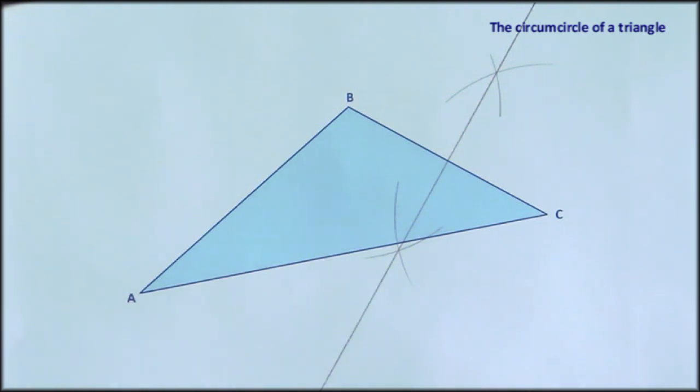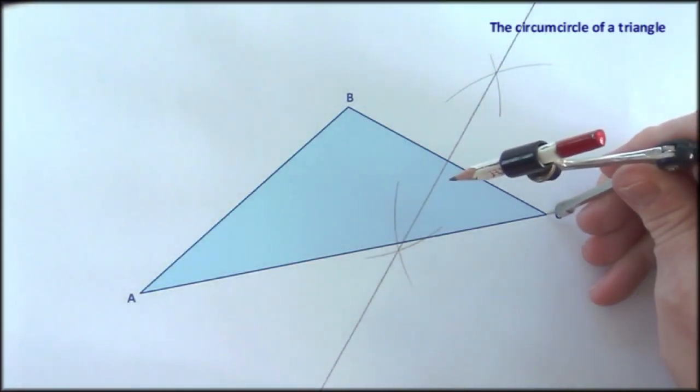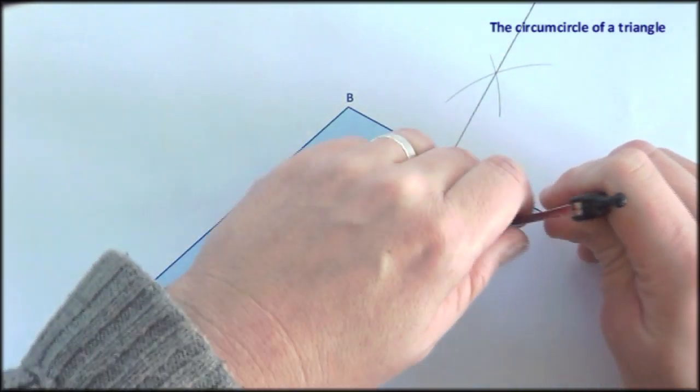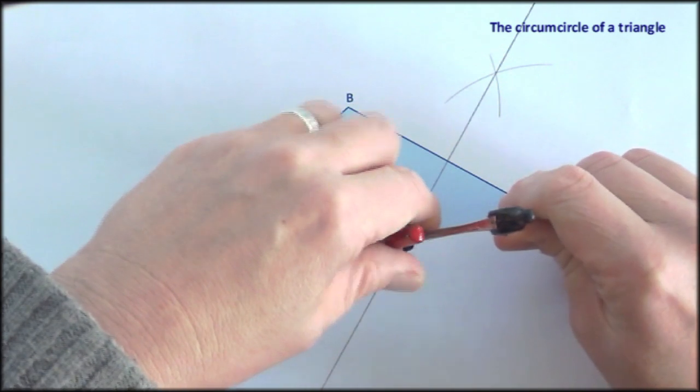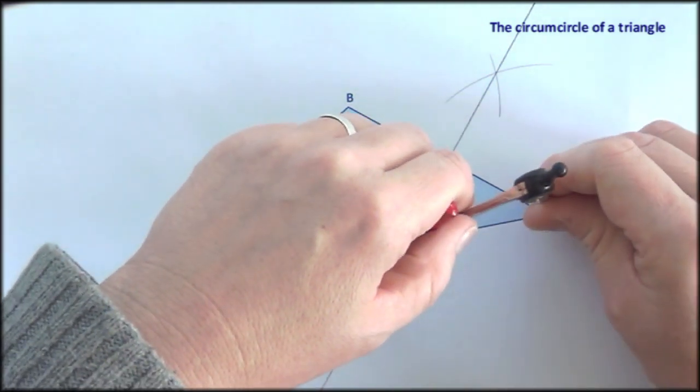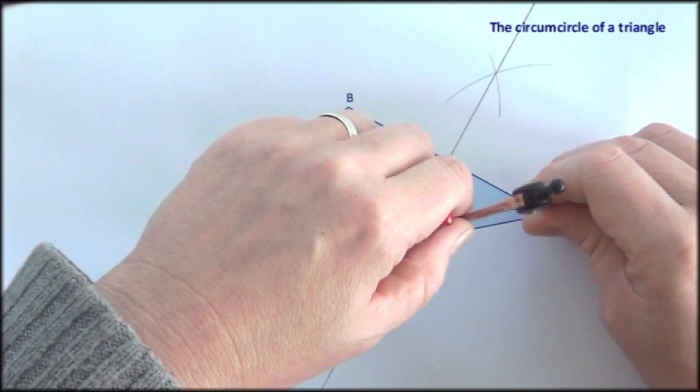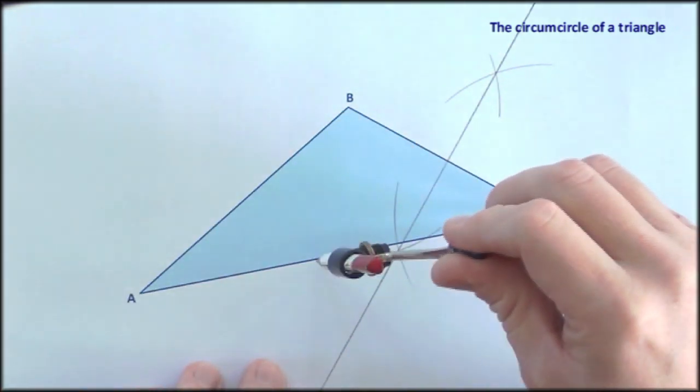Let's work opposite B now. So I'm going to draw the perpendicular bisector of AC. I need to get the compass a bit wider for this. Make sure you point right on the vertex.